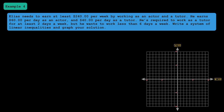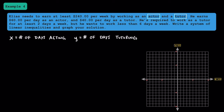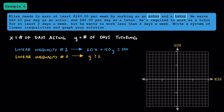Let's take a look at another one. Elias needs to earn at least 240 dollars per week by working as an actor and a tutor. He earns 60 dollars per day as an actor and 40 dollars per day as a tutor. He's required to work as a tutor for at least two days a week, but wants to work less than six days a week in total. Let x represent the number of days he spends acting and y represent the number of days he spends tutoring. Our first inequality: 60x plus 40y is greater than or equal to 240. Our second: y is greater than or equal to 2. And our third: x plus y is less than 6.